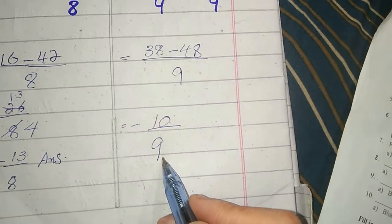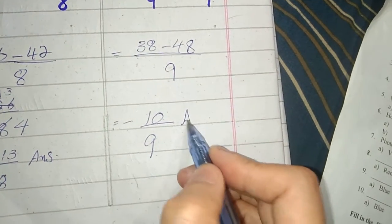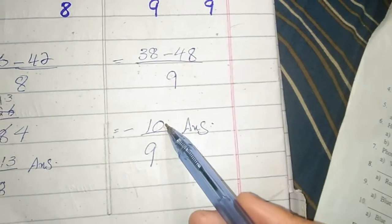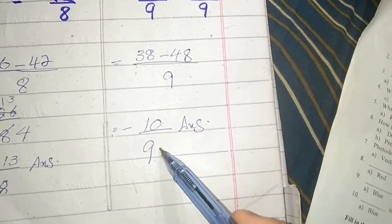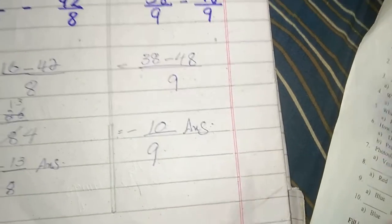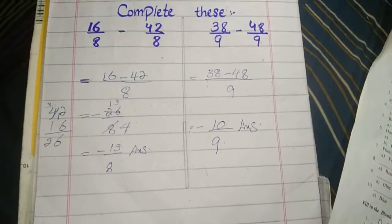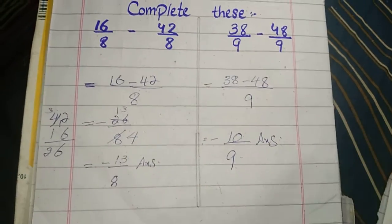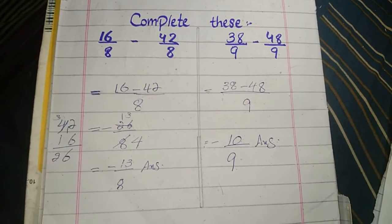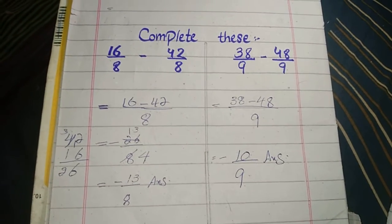9 is an odd number. 10 by 9 is the answer. Please comment, I will answer. Thank you.